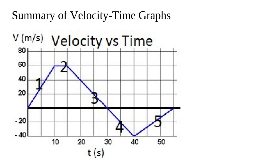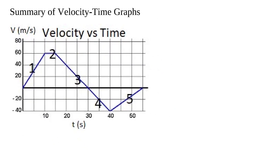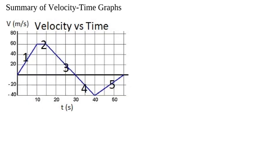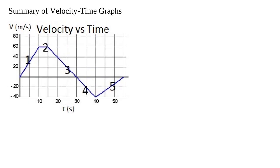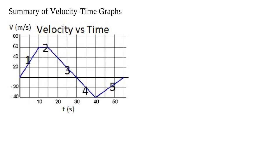So there are really two main things you're going to be doing. One is going to be finding slope. The other one is going to be finding the area. The slope of a velocity-time graph is going to tell you the acceleration.